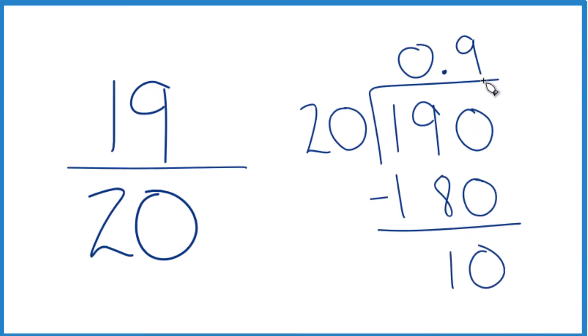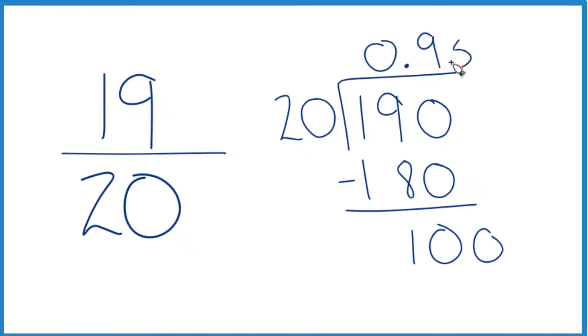20 doesn't go into 10, but if we move over one decimal place, we could call this 100. And now 5 times 20, that is 100.